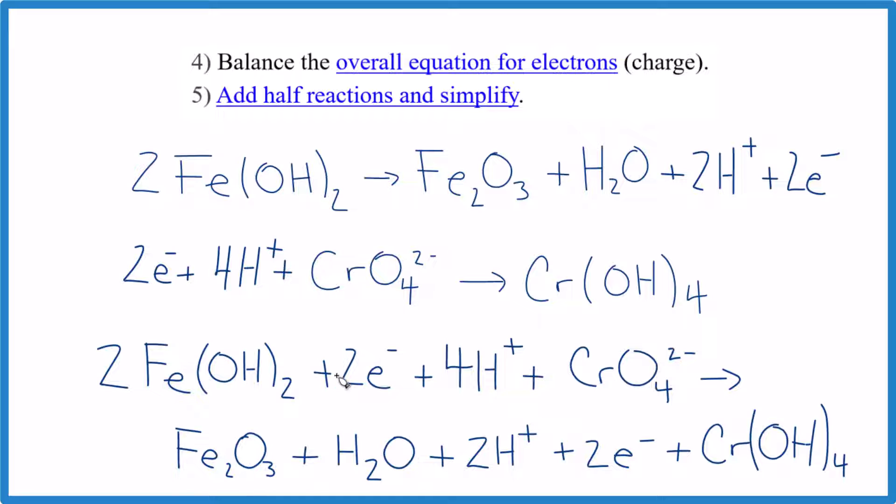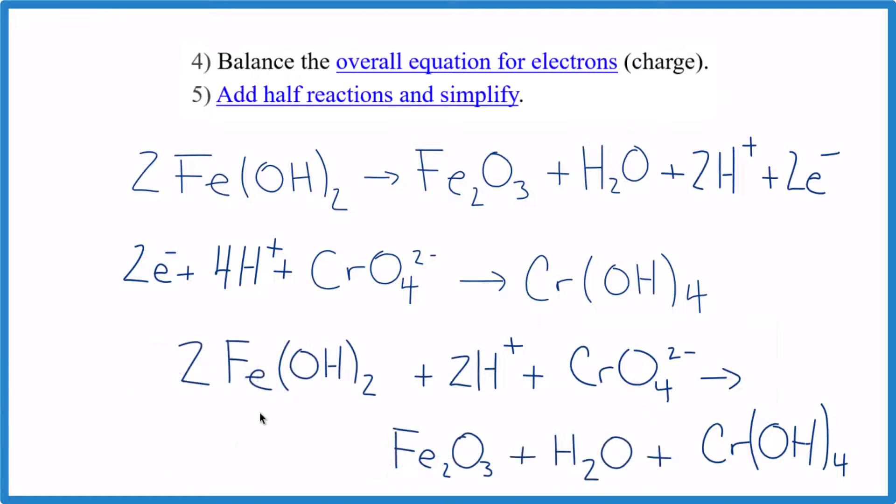And now we have the redox reaction for FeOH2 plus CrO4 2 minus. We do need to cancel some things out because we have two electrons here and here. Let's get rid of those. We have 2H plus here and 4H plus here. So 4 minus 2 is 2. So we get rid of these and call this 2. Clean it up. And this is the balanced redox in acidic medium.